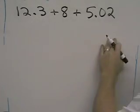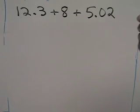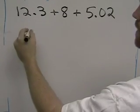In order to add these three decimals, what you need to do is first line up the decimals, the decimal points.